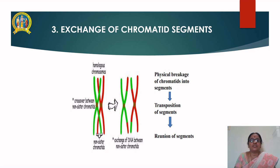Breakage: physical breakage of chromatids into segments occurs. Transposition of segments occurs, which leads to the reunion of segments. These are the stepwise exchanges of chromatid segments that occur during crossing over between the two non-sister chromatids.